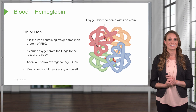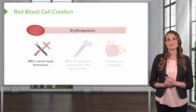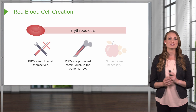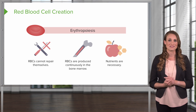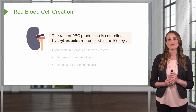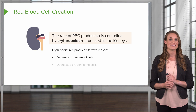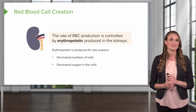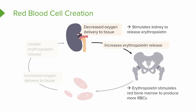How are red blood cells made? This is a process called erythropoiesis. Red blood cells cannot repair themselves, so they have to be constantly generated. These are produced continuously in the bone marrow, and certain nutrients such as riboflavin, vitamin B12, and folic acid are necessary for this process. The rate of production is controlled by erythropoietin, which is produced in the kidneys. This is done for two reasons: a decrease in the number of cells, and a decreased level of oxygen in the cells. The decreased oxygen in the tissues stimulates the release of erythropoietin, which increases erythropoietin in the blood and stimulates the bone marrow to produce more red blood cells. This in turn increases oxygen to the tissues, and that feedback inhibits further erythropoietin release.